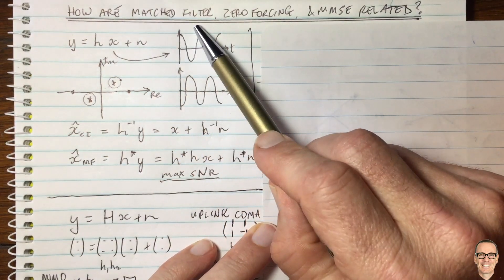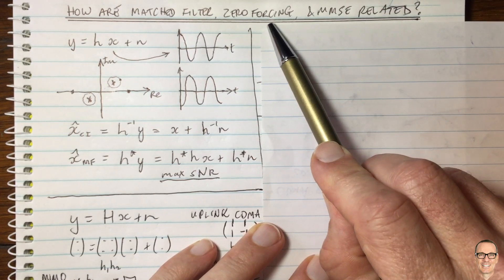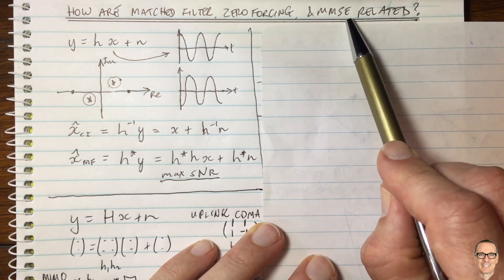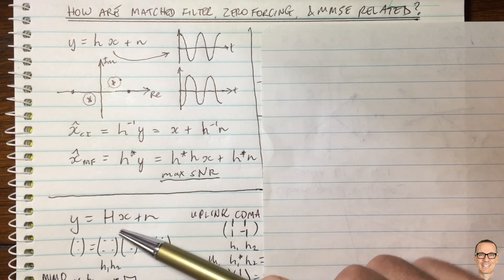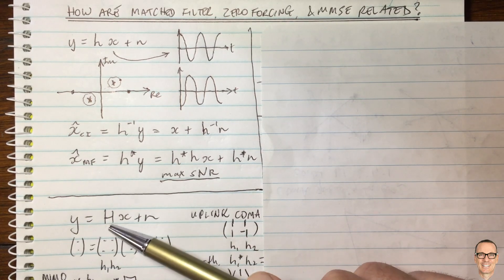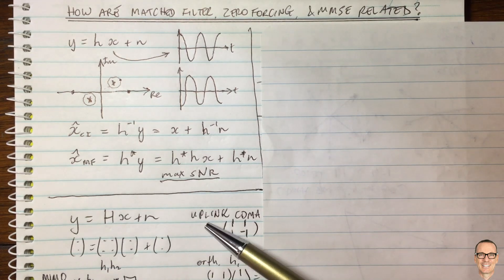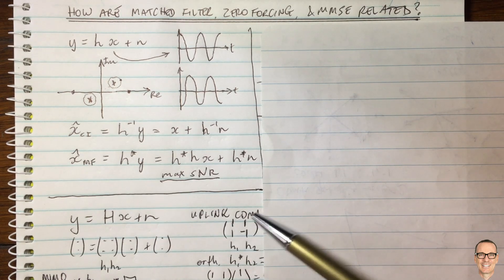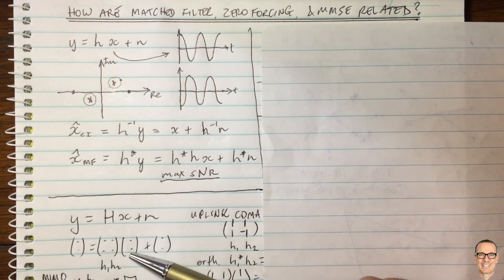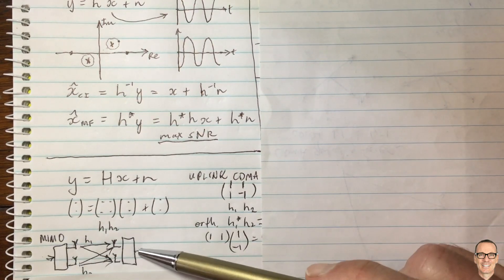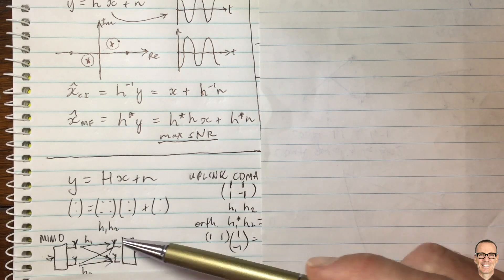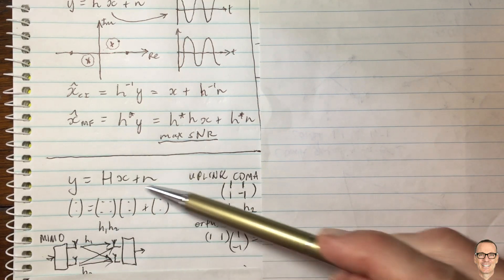How are the matched filter, the zero forcing receiver, and the minimum mean squared error receiver related? We're going to look at a digital communications example where X is a vector and H is a matrix. This applies, for example, to an uplink CDMA scenario where the elements of the X vector are the symbols from the different users, and also to a MIMO scenario where you have a single user but multiple antennas. This is a standard signal model.